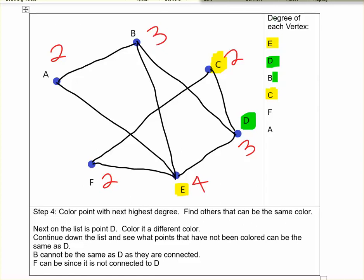So I'm working down, can B be green? Well, nope. B is connected to D. Can F be green? Yeah, F is not directly connected to D. So F could be green. And then could A be green? A can also be green because it is not connected to D and it is not connected to F, the other points I made green.